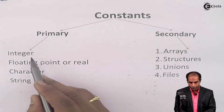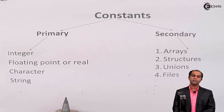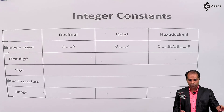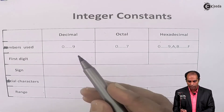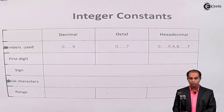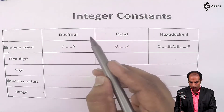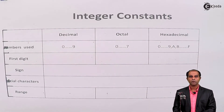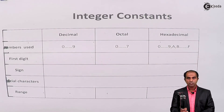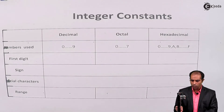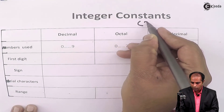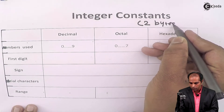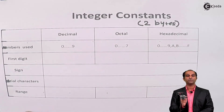Let's take up the first type of constant, that is integer constant. In C language, the integer constant can be further classified into three categories: decimal constant, octal integer constant, and hexadecimal integer constant. A constant will consume some memory. An integer constant consumes two bytes of memory, that is 16 bits.